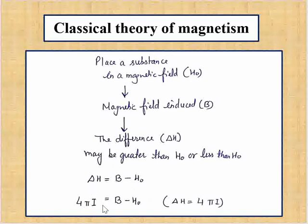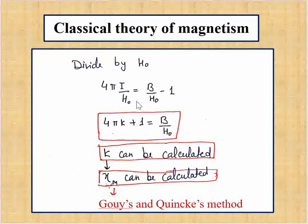So the equation is: 4πI = B − H₀. Dividing both sides by H₀ gives 4π(I/H₀) = B/H₀ − 1. Since I/H₀ is the volume susceptibility kappa, we get: 4πκ + 1 = B/H₀.